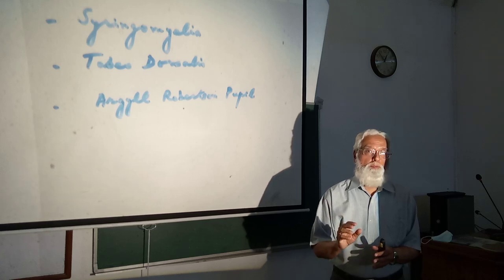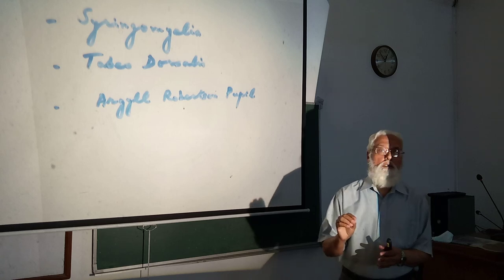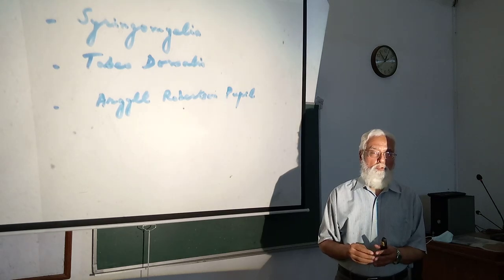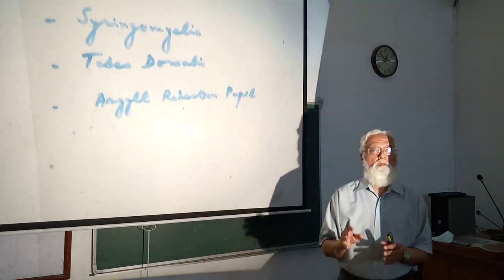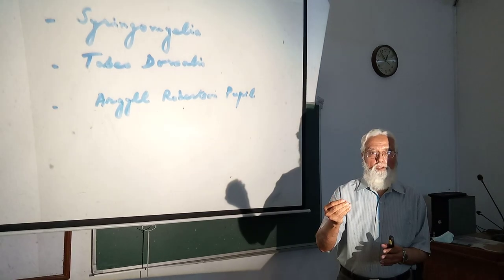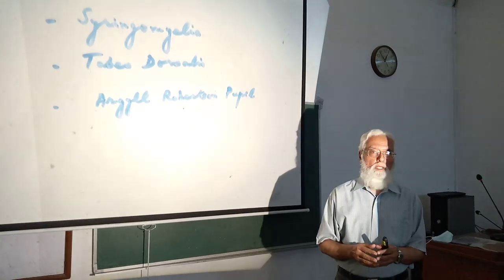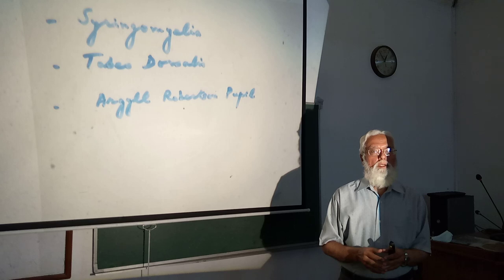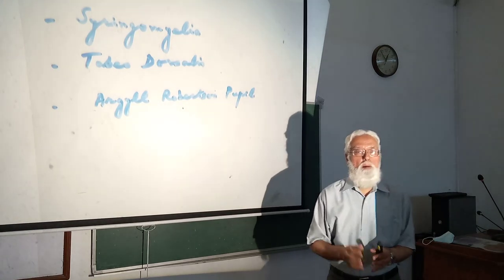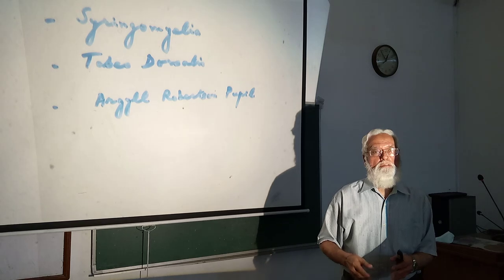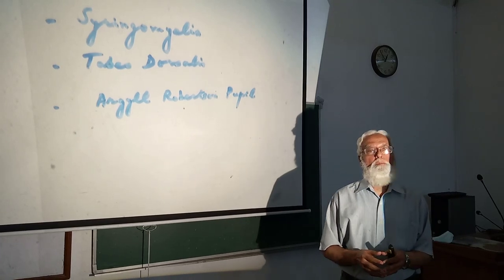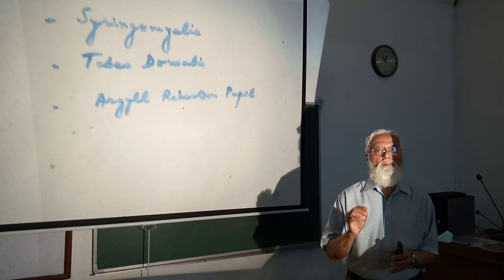In the upper limbs, there is lower motor neuron type of weakness or paresis, starting from the fingers and hands towards the arm. In the lower limbs, there are features of upper motor neuron type of paresis.